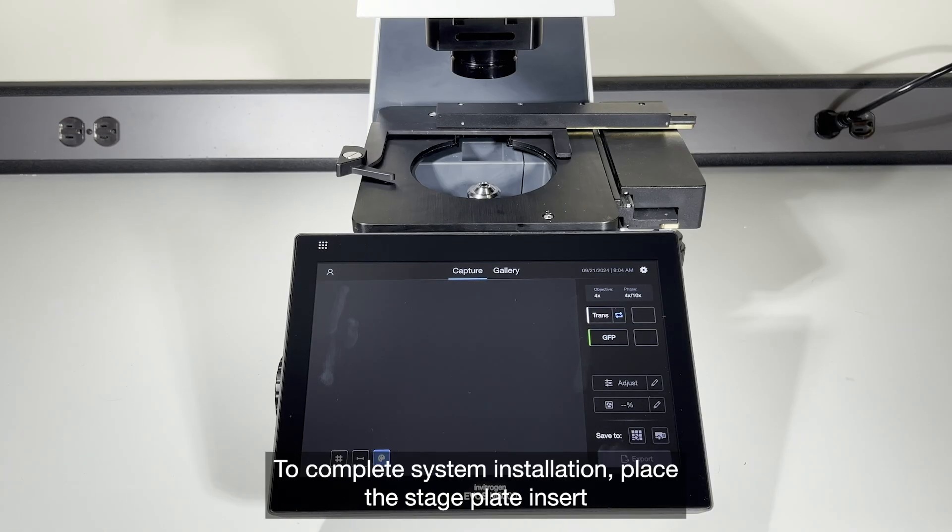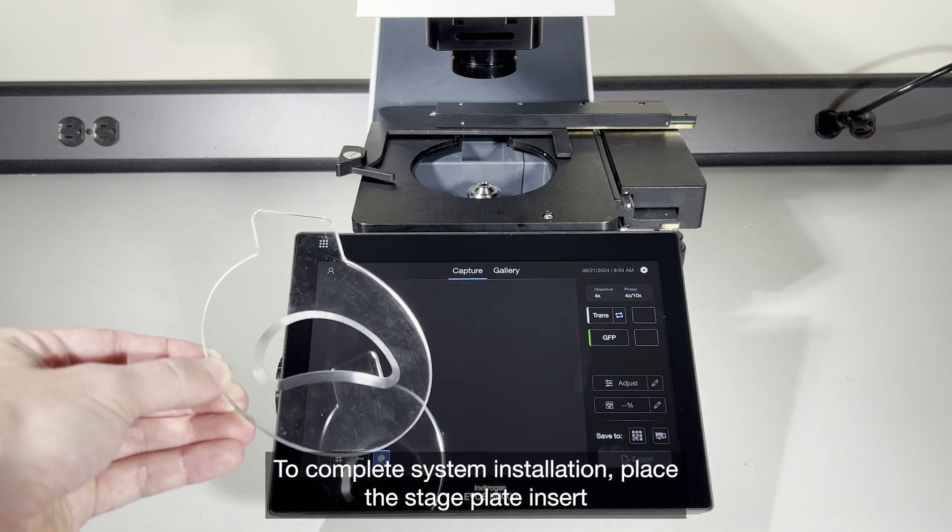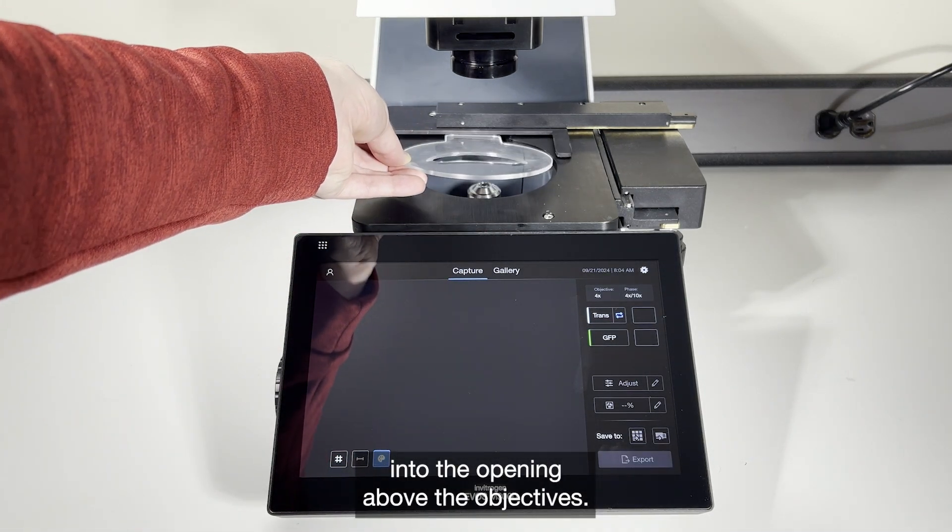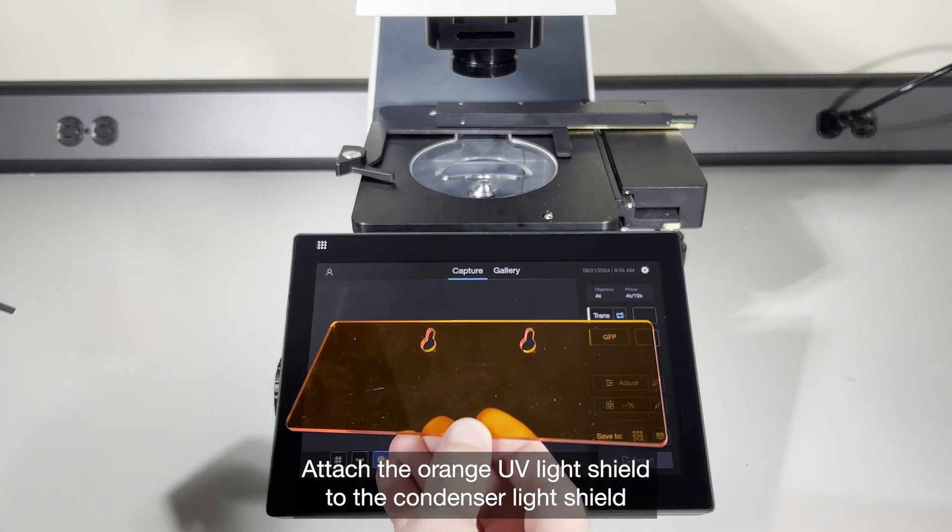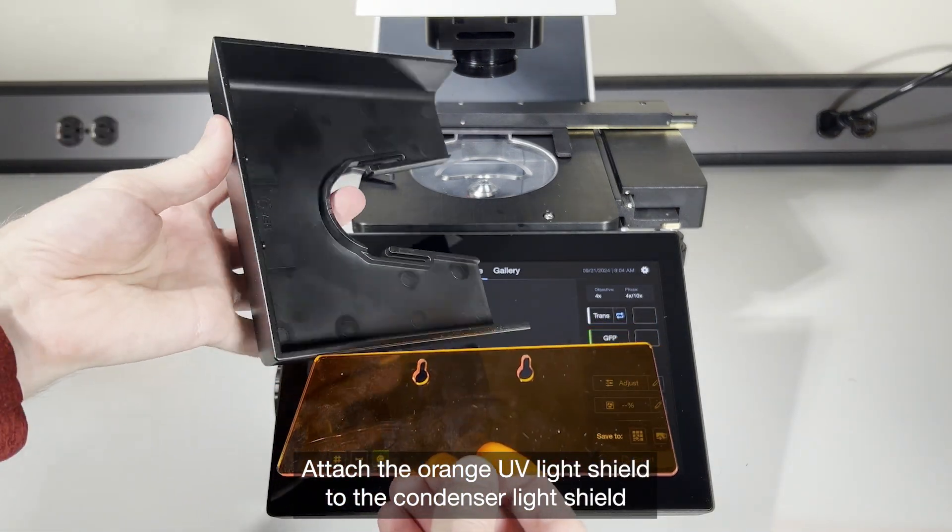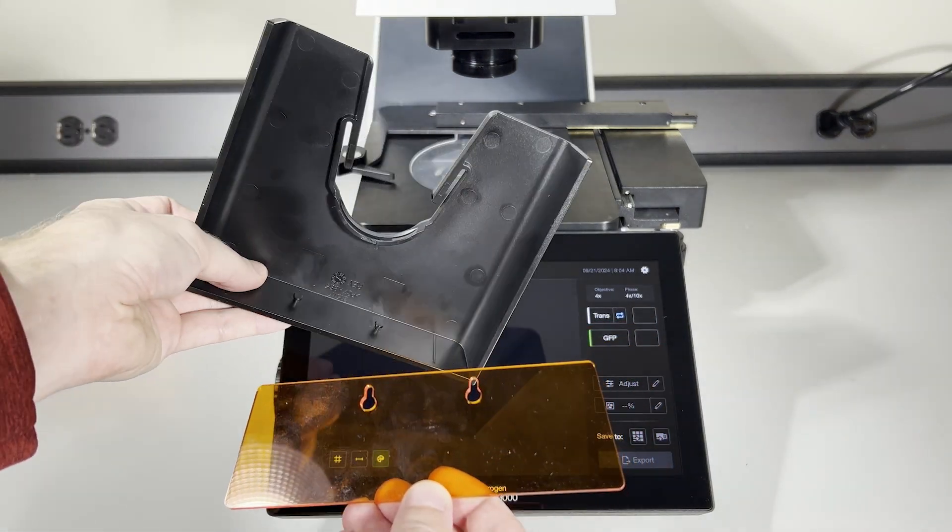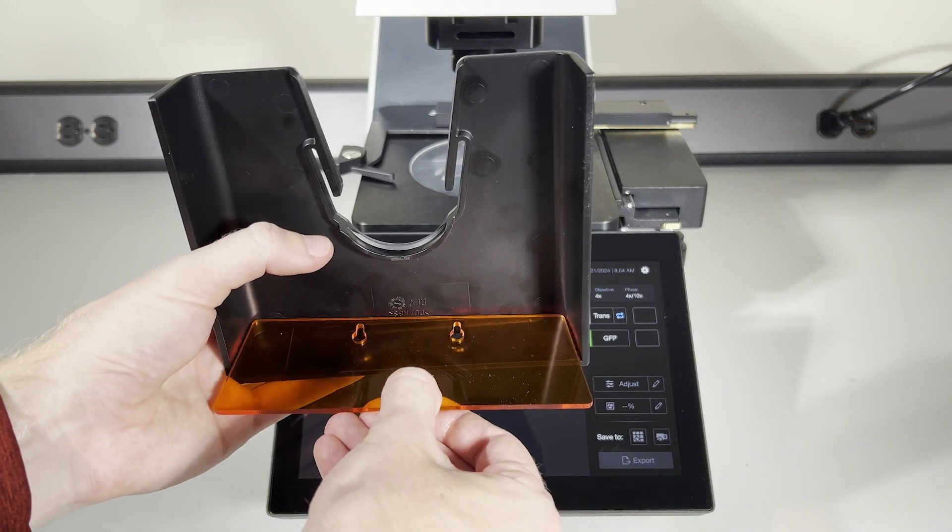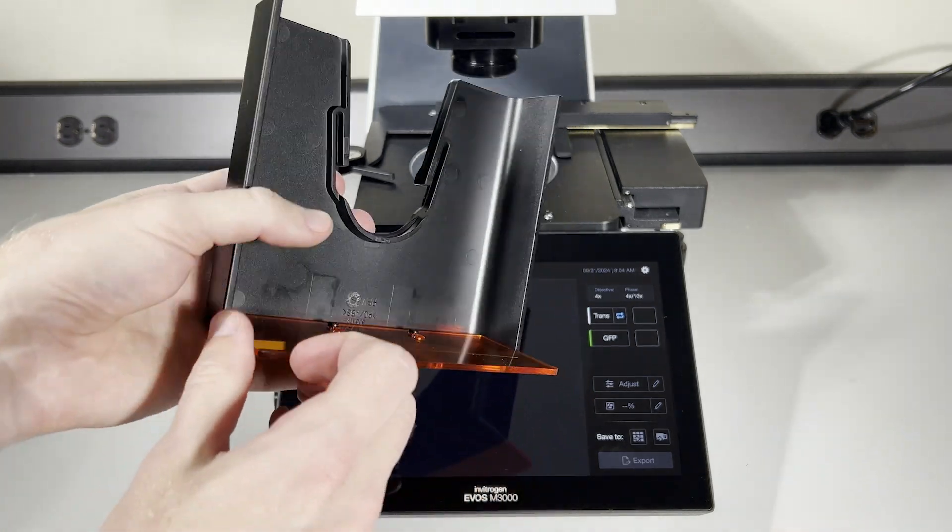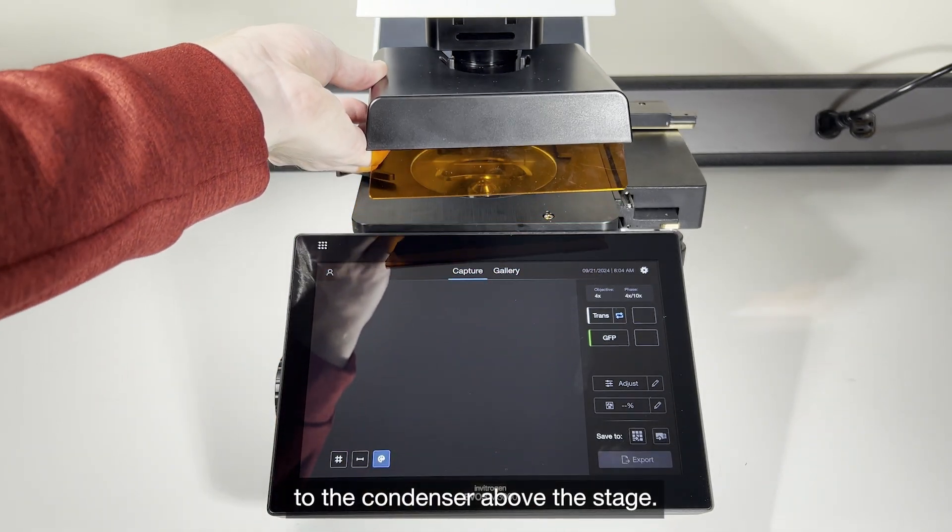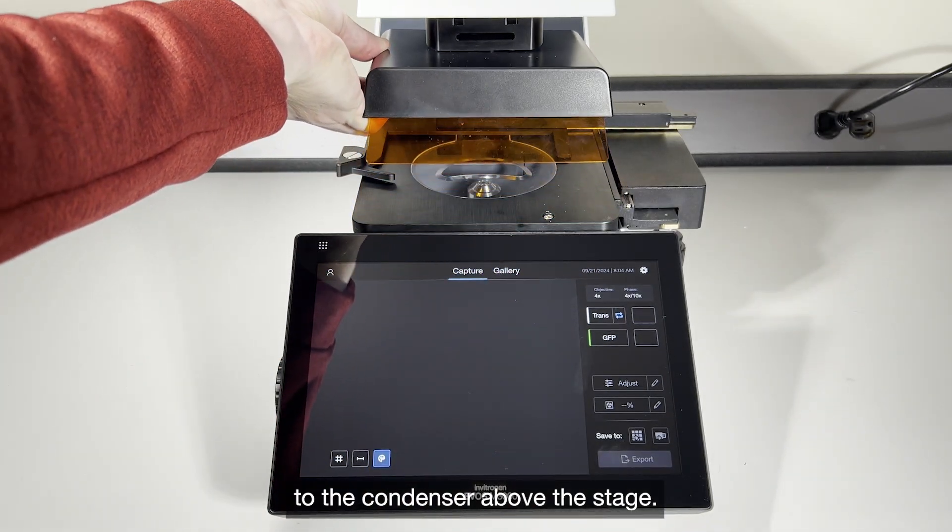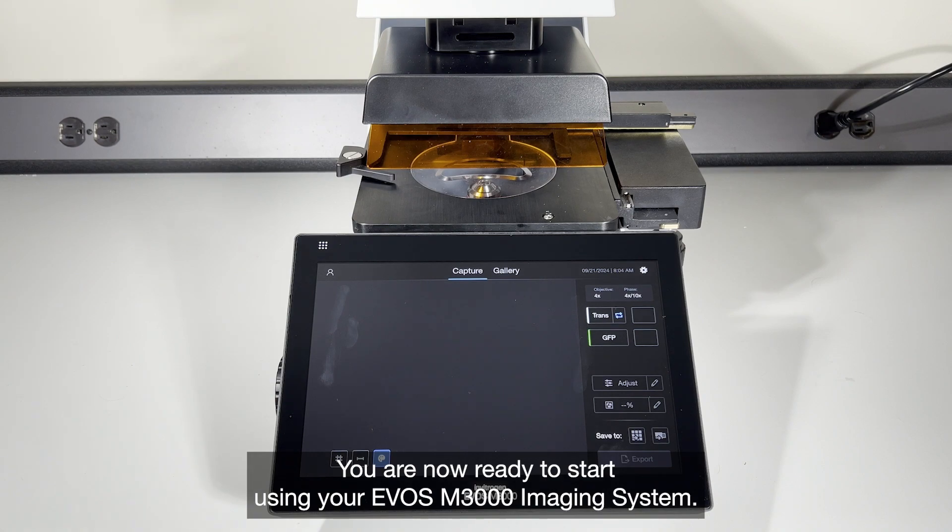To complete system installation, place the stage plate insert into the opening above the objectives. Attach the orange UV light shield to the condenser light shield and clip the shield to the condenser above the stage. You are now ready to start using your EVOS M3000 imaging system.